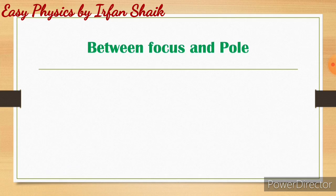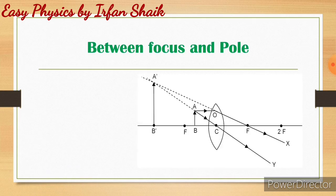Sixth case: when object is placed between focus and pole. Object AB is placed between focus and pole. A very important thing to remember here is that the image is also formed at the same side of the lens. Only in this case we find both object and image on the same side of the lens. In all remaining cases, the image forms on the other side.